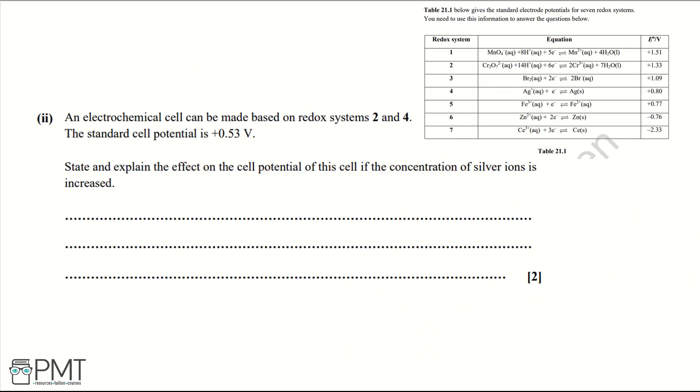Part 2: An electrochemical cell can be made based on redox systems 2 and 4. The standard cell potential is plus 0.53 volts. State and explain the effect on the cell potential of this cell if the concentration of silver ions is increased.